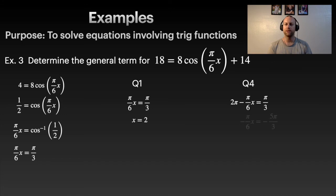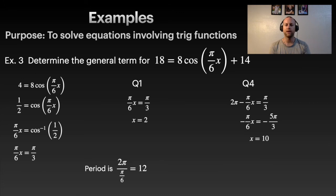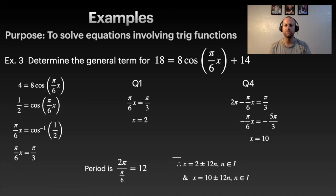After solving, we subtract 2pi from both sides and divide by −π/6, confirming x = 10. For the general term, we need the period: 2pi divided by the b value (π/6) gives 12. So the two general equations are x = 2 ± 12n and x = 10 ± 12n, where n is any integer.